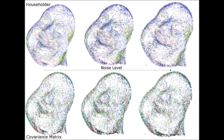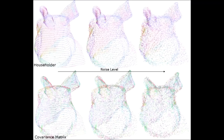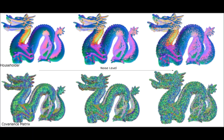We evaluate an alternative approach to calculate tangent vectors: the Householder formula. With increasing levels of noise, this formula provides higher local coherence between tangent vectors than the covariance matrix calculated vectors. Higher local coherence better achieves the illusion of a closed surface, which is the ultimate goal of splatting.